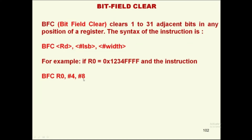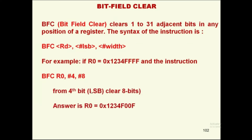After executing the BFC instruction, the R0 register will have the value 0x1234F00F. From the 4th bit, 8 bits are cleared. This instruction clears 8 bits starting from the 4th location of R0 and places the result back in R0. So the bit field clear is straightforward: from the 4th bit, clear 8 bits.